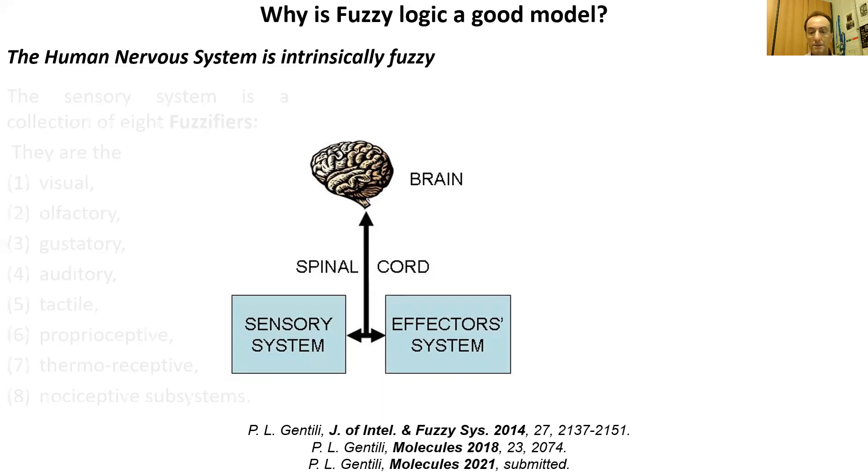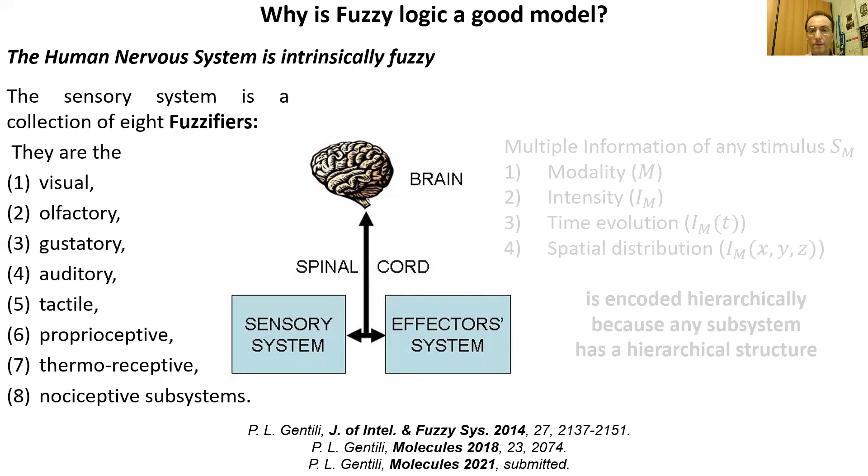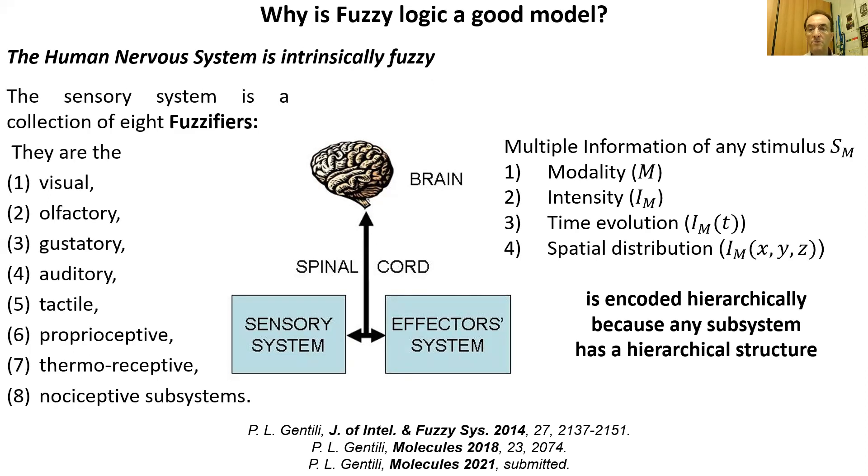Our sensory system is a collection of eight fuzzifiers that are visual, olfactory, gustatory, auditory, tactile, proprioceptive, thermoreceptive, and nociceptive subsystems. The multiple information of any stimulus—that means its modality, intensity, time evolution, and spatial distribution—is encoded hierarchically because any sensory subsystem has a hierarchical structure.